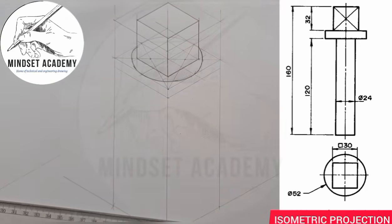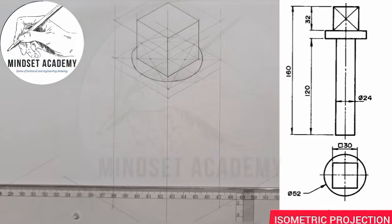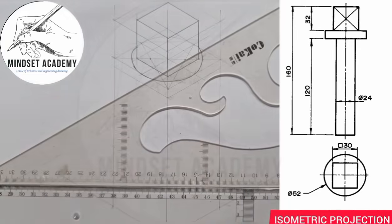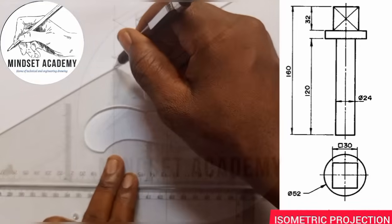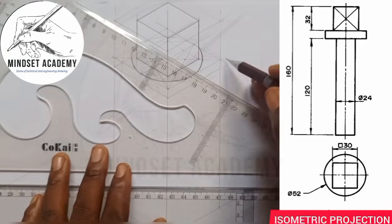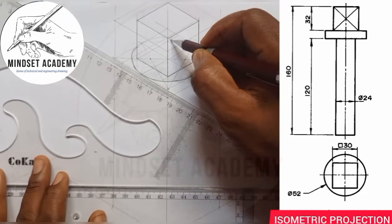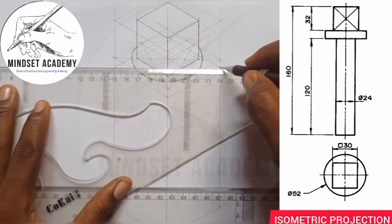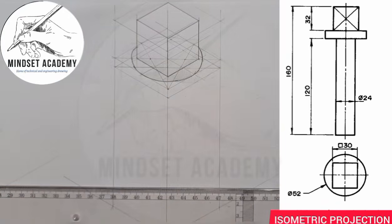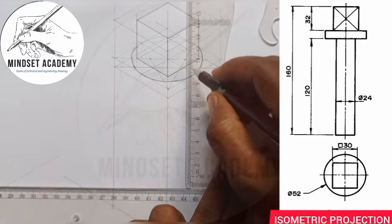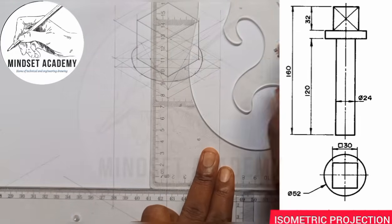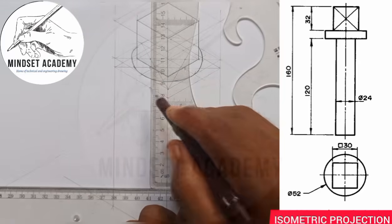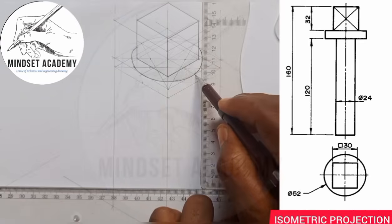I'll do the same thing for the other part too by completing it. For the base, from this point I'll draw this way, and from this point I'll draw this way, meeting here and marking this point. Join the diagonals — this diagonal to that diagonal. Then transfer the points from this point to those diagonals here, and from this point to those diagonals here. I can just mark here as my reference point and also here as my reference point.